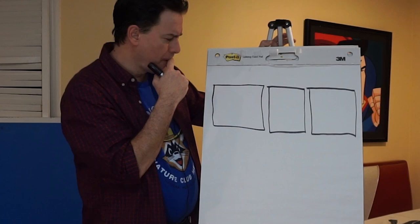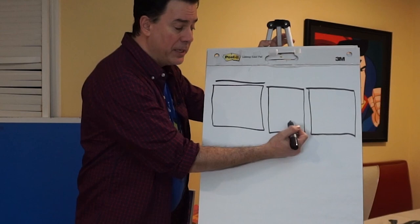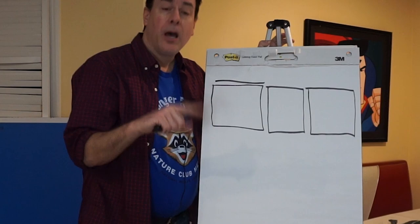What are we going to have happen? In this story, we often put a title right here. We have something happen, and as in all great stories, this will have a beginning, a middle, and an end. Does that sound good, Will? Yeah.